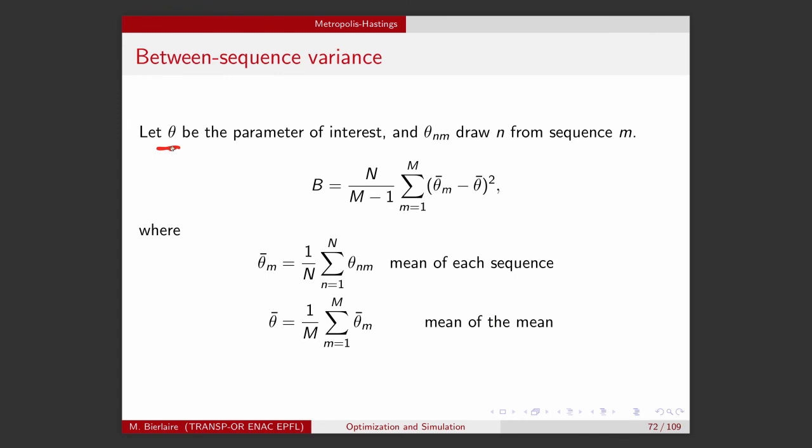If theta is the parameter of interest, and theta_nm is the draw n from sequence m, I can calculate the between sequence variance using this formula. So capital B is the between sequence variance.